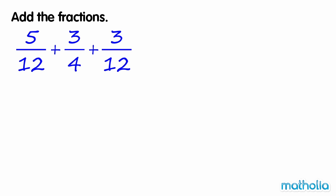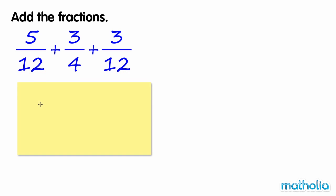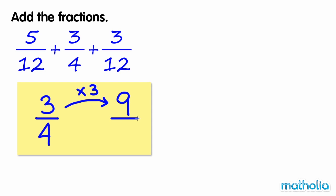Add the fractions. Find 5 12ths plus 3 quarters plus 3 12ths. Two of the fractions have a denominator of 12. Let's find an equivalent fraction of 3 quarters where the denominator is also 12. 3 quarters is equal to 9 12ths.